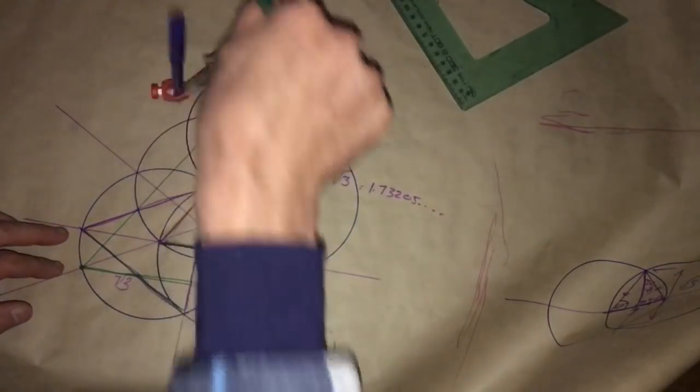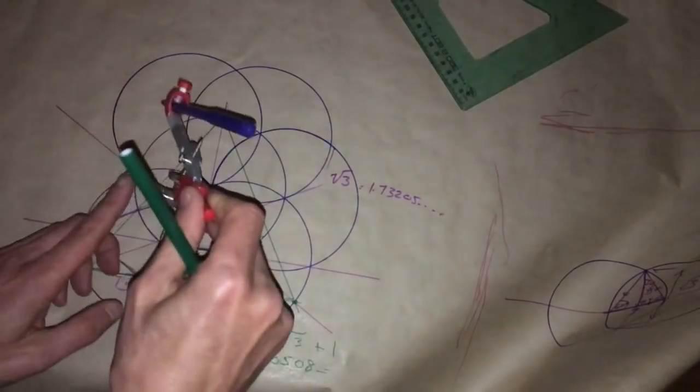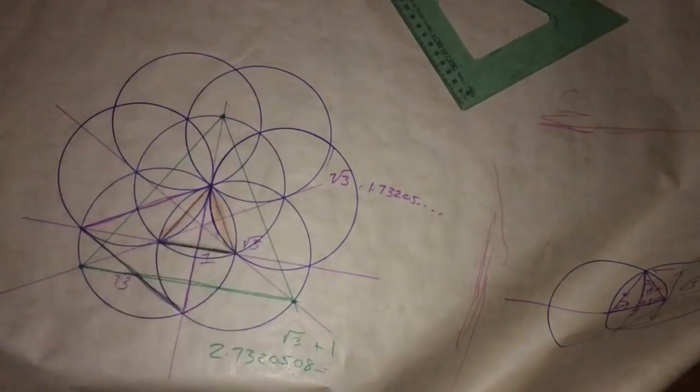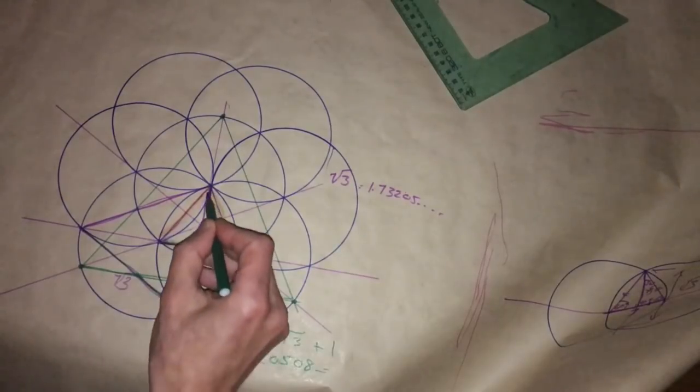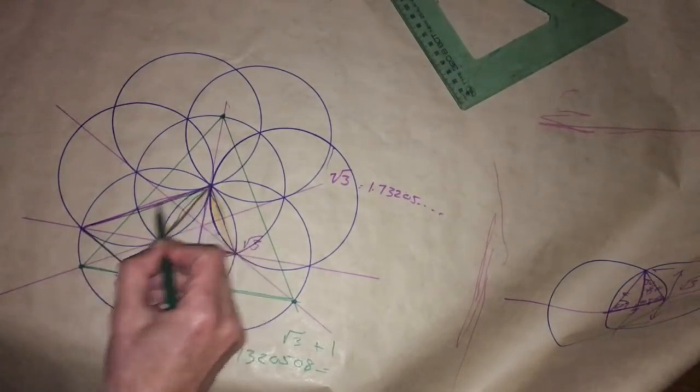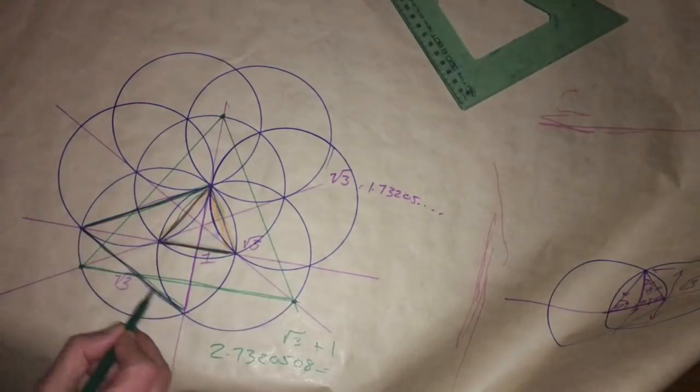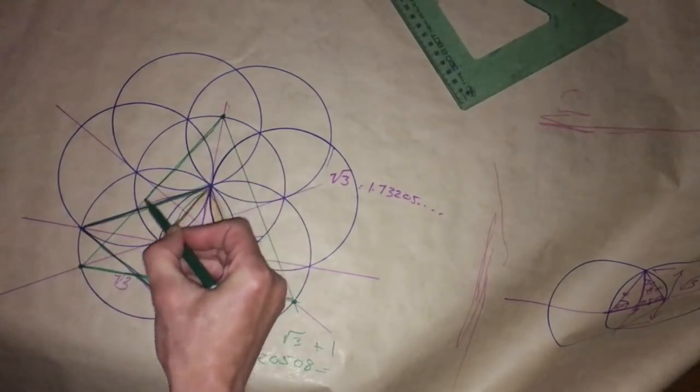And now we have, so now this will be the central point and now we have seven circles, six on the inside, six on the outside. Now we have the seed of life.